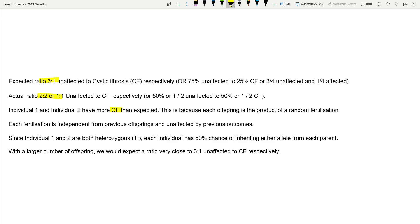So now let's have a look at the answers here. The expected ratio is three to one, actual is two to two or one to one, because they have more cystic fibrosis than expected, because each individual offspring is a product of random fertilization. And each fertilization is independent from each offspring. It's like saying, if the family had a boy as a first child, does that mean the second child must be a girl? No, because every single child, the fertilization event is independent from each other. The previous child has nothing to do with the next one, because there's another whole process of fertilization that is random. It's not a set rule. Since they're both heterozygous, each individual has 50% chance inheriting either allele from each parent. So you can get a small t, because it's big T, small t, there's 50% chance getting this, 50% chance getting this.